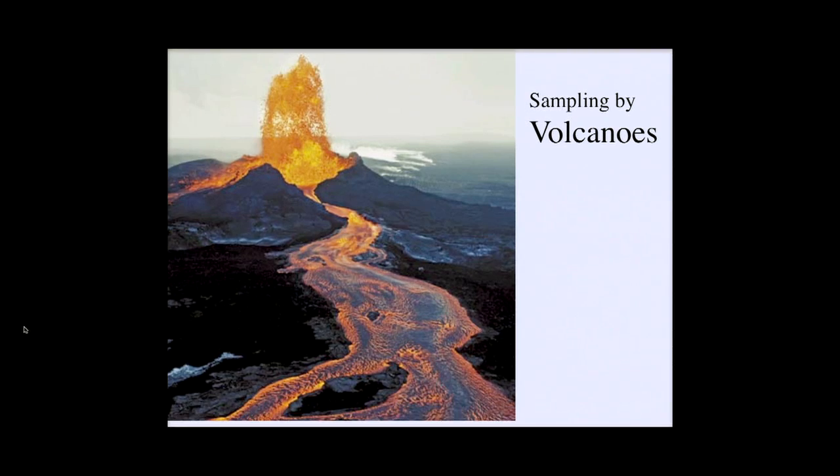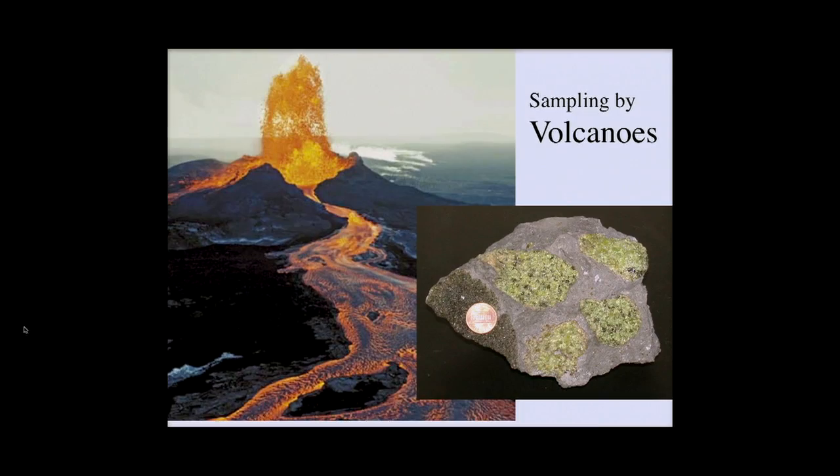In addition to seismology and other geophysical techniques, we have sampling by volcanoes around the Earth, coming from 50 to 100 kilometers deep. Occasionally those volcanoes have incorporated in the lavas little chunks of the Earth's mantle. The green pieces are chunks of the Earth's mantle — the green mineral is olivine, which is the main mineral of Earth's upper mantle. We have a rock here that you can pass around that is very much like this, with those chunks of mantle in it.